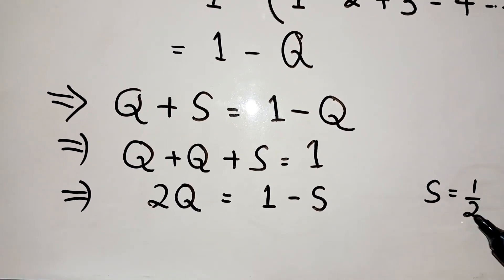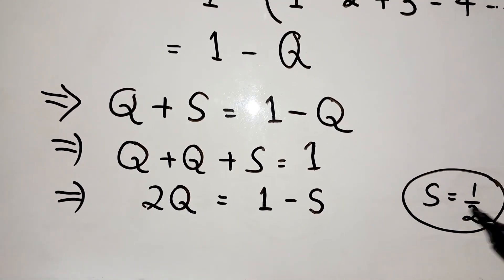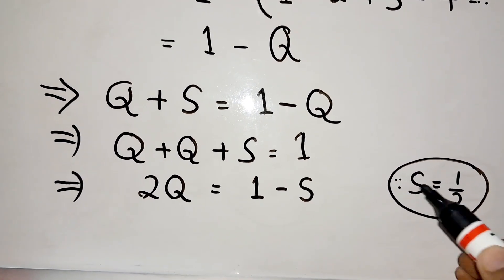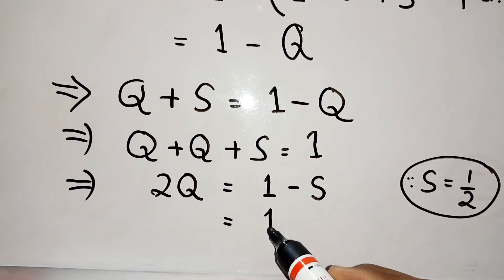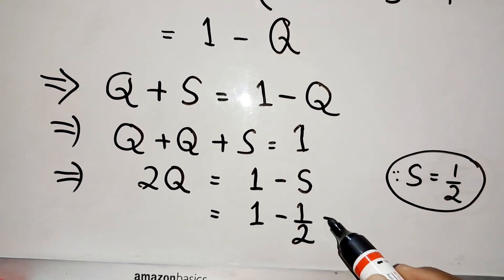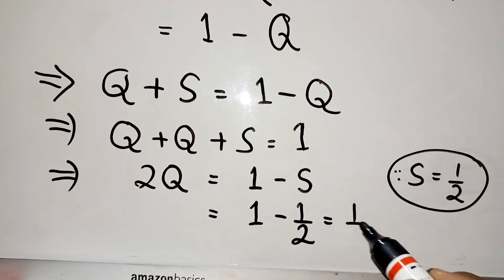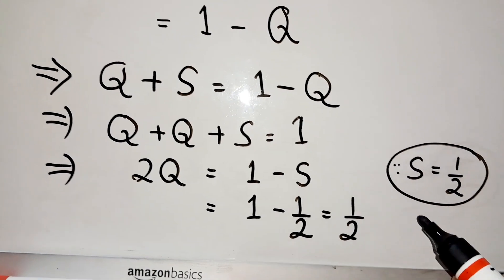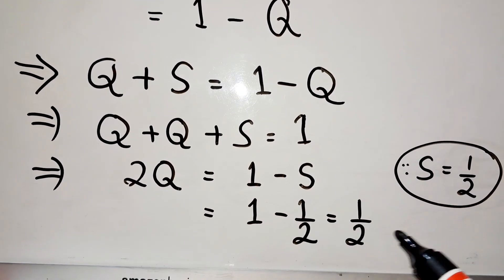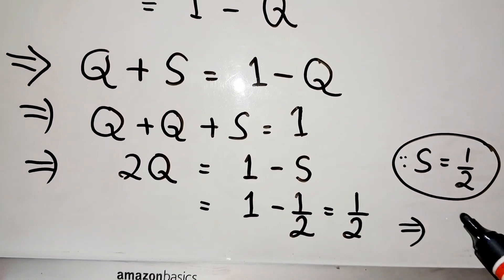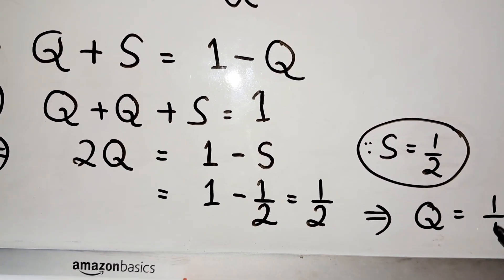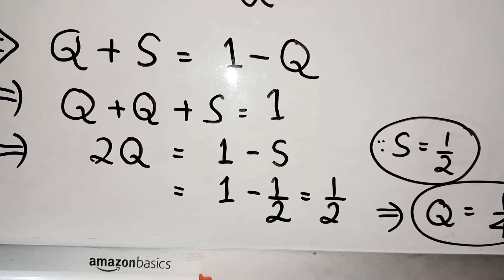By our previous calculations we got S equals one half. So we put 1 minus one half, that is nothing but one half. So 2Q equals one half, which means Q equals 1 by 4. Note this down: S equals one half, and from this equation Q equals 1 by 4.